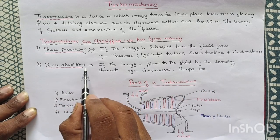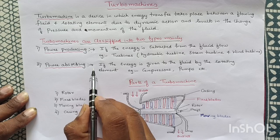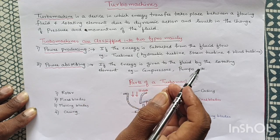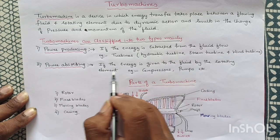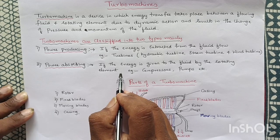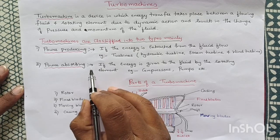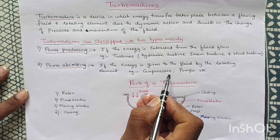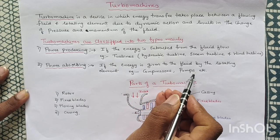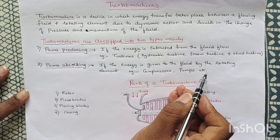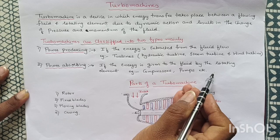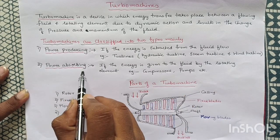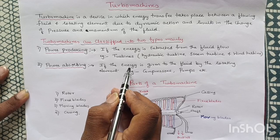We will now study the Power-Absorbing Turbomachine. If the energy is given to the fluid by the rotating element, then it is called a Power-Absorbing Turbomachine. For example, compressors, pumps, and even the ceiling fan we use in our homes — these are all examples of the Power-Absorbing Turbomachine.